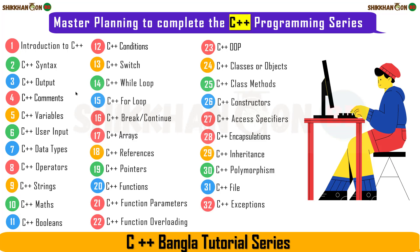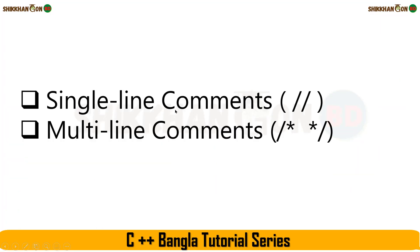Basically, C++ comments have two types. One is single line comments and another one is multi line comments. Single line comments look like this — double slash — and multi line comments look like this — slash asterisk sign, and again asterisk sign slash.